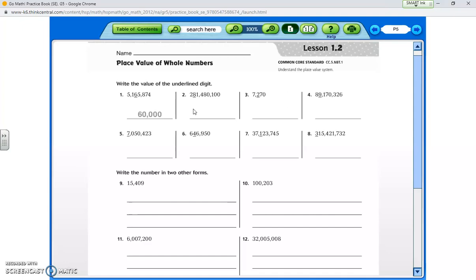Remember, if you're having trouble reading these numbers, chunk it. We have everything covered up behind the comma. We have 5,165,874. So in this case, the 6 is underlined. We're going to bring down the 6. Everything in front of that number disappears. And everything behind that number turns into a 0. So we're adding four 0s behind this because this is in the ten thousands column. So we have 60,000.